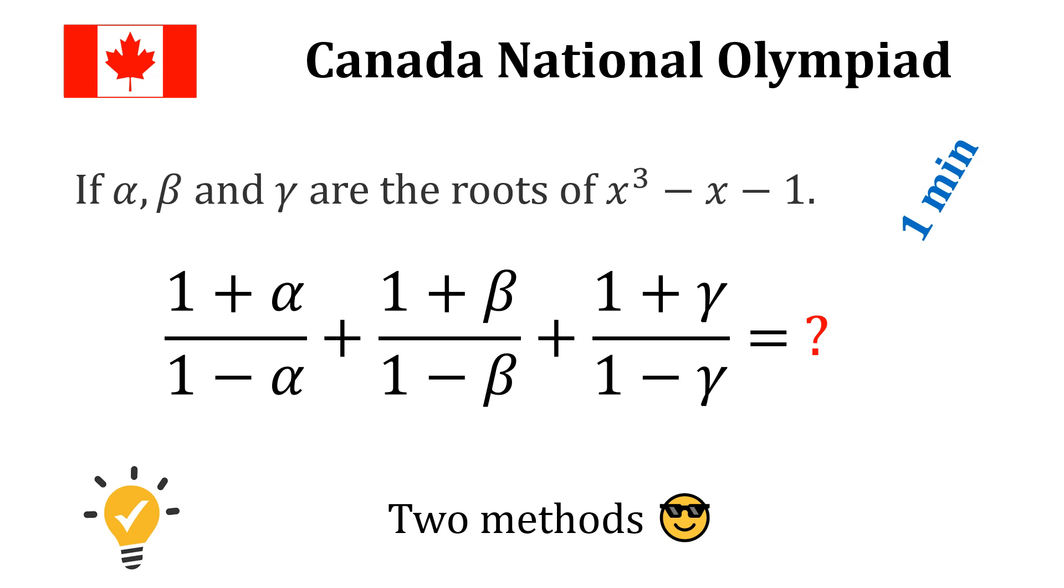Alpha, beta and gamma are the roots of the polynomial x cubed minus x minus 1. And we want to compute 1 plus alpha over 1 minus alpha plus 1 plus beta over 1 minus beta plus 1 plus gamma over 1 minus gamma. In this video, I'm going to show you two ways of solving this problem, and then I'll let you choose the one you prefer. If you are new here, do not forget to subscribe.